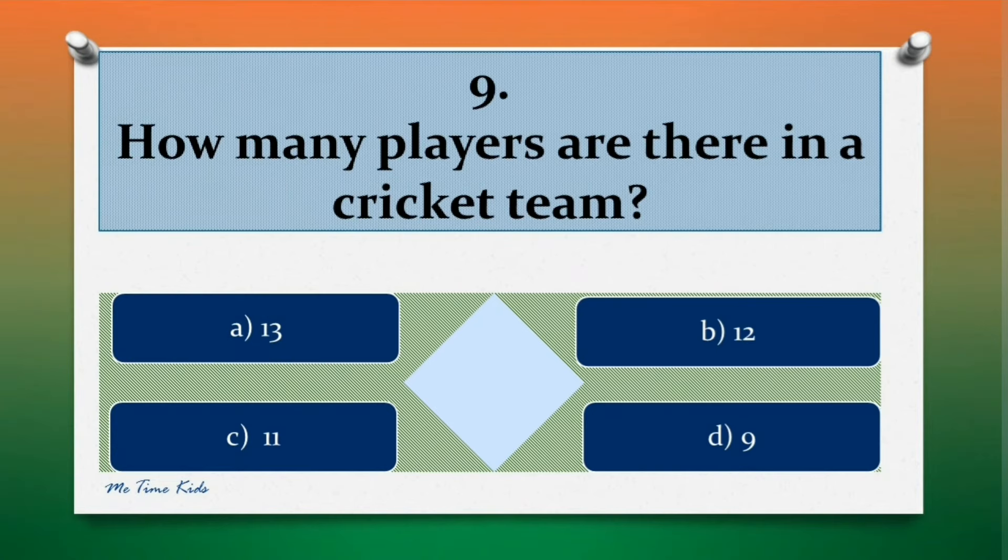Question 9. How many players are there in a cricket team? Options are: a. 13, b. 12, c. 11, d. 9. Correct answer is c. 11.